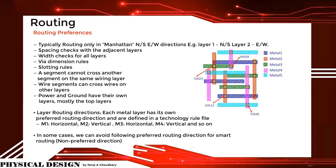Each metal layer has its own preferred routing direction defined in a technology rule file. Routing can be done such that M1 is horizontal, M2 is vertical, M3 horizontal, M4 vertical, and so on. In some cases, we can avoid the preferred routing direction for smart routing in non-preferred directions. For a design with 9 metals, layer usage can be decided based on the design — for example, top layers 8 and 9 for power routing, middle layers 5, 6, and 7 for clock routing, and bottom layers for standard cell routing.